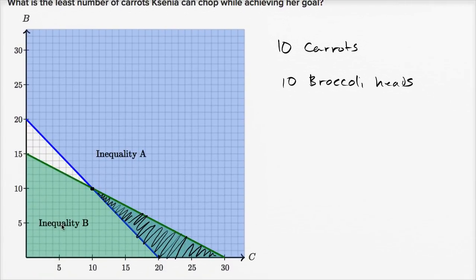That's the least amount. If you wanted to somehow figure out less than 10 carrots, in any of those scenarios, there's no overlap. If you said, oh, is there any way to do 9 carrots? If you look over here, there's no overlap at C equals 9 between the two solution sets. So the minimum right over here is actually the point of intersection of these two lines. 10 carrots, 10 broccoli heads.